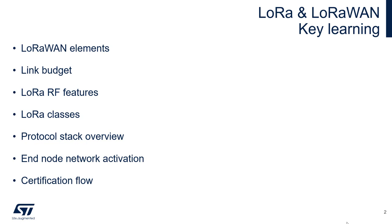We'll go through LoRaWAN elements, then we'll discuss the link budget, the range and distance of communication, then the basic LoRa RF features, then we'll discuss LoRa classes — we have three different classes of operation mode — then protocol stack overview, node network activation procedures — we have two procedures — and the practical part: the certification flow.